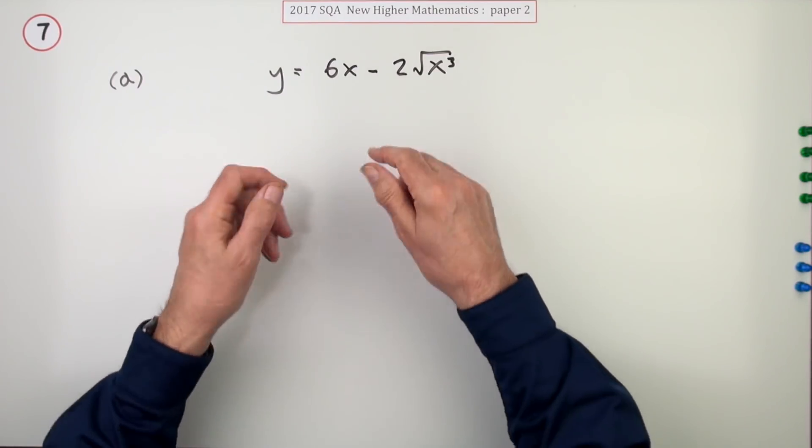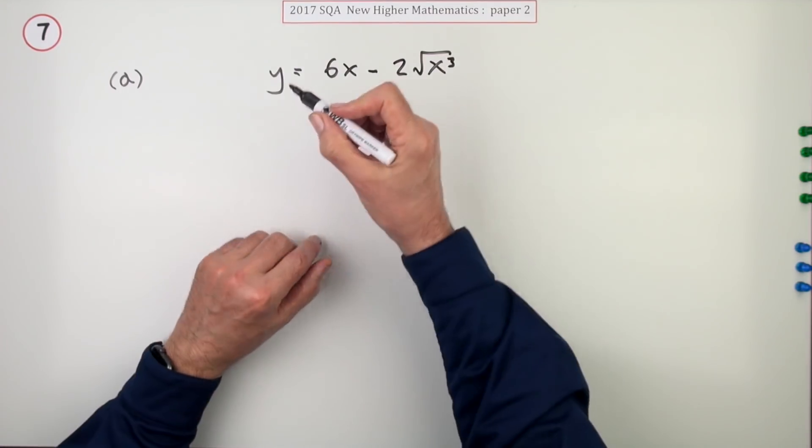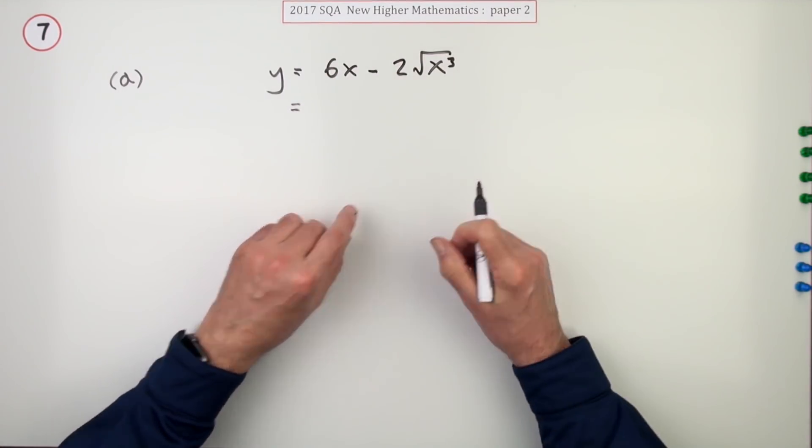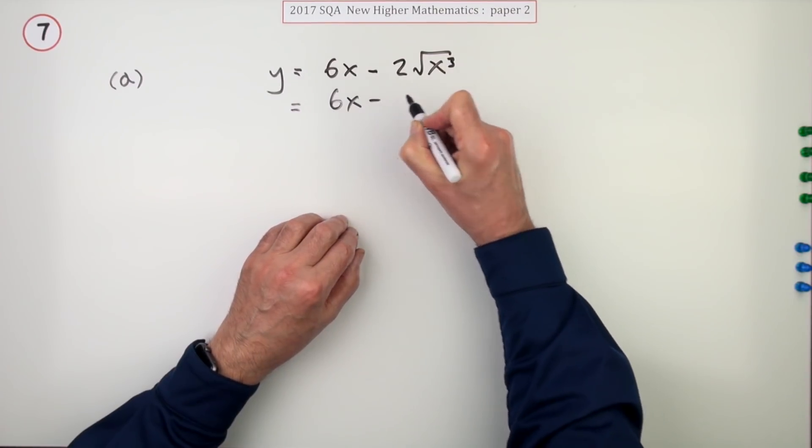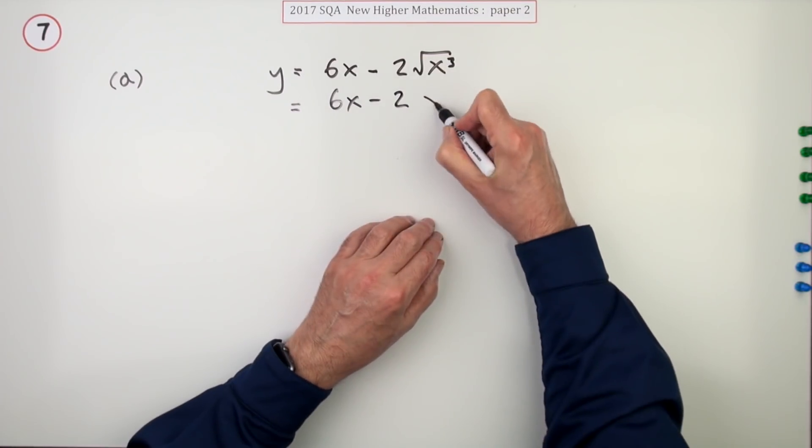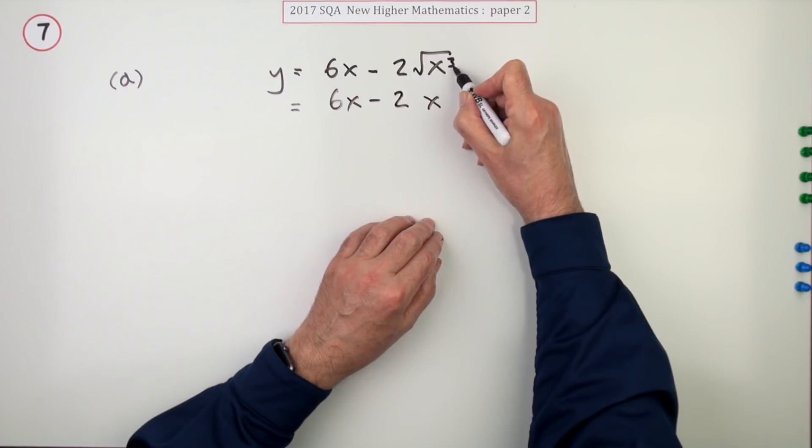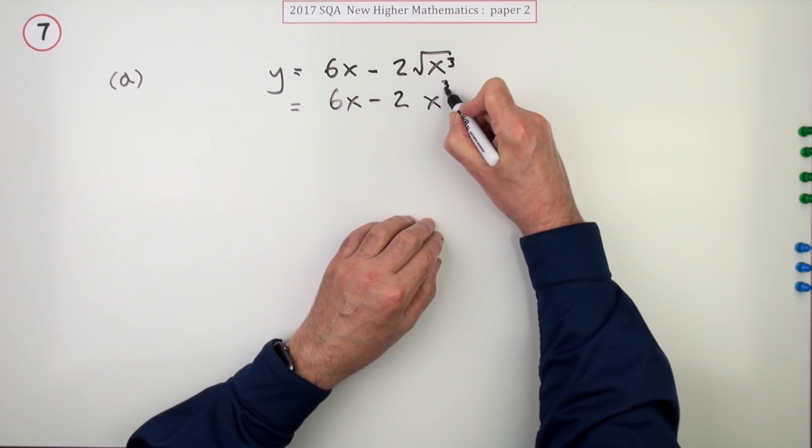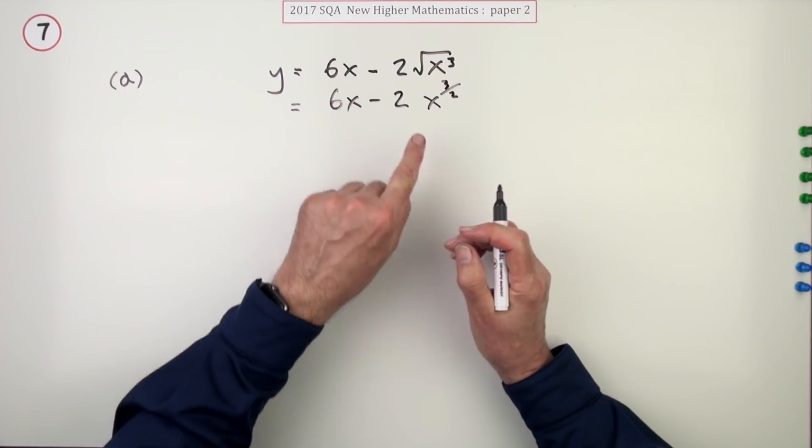Well that'll be differentiate. Once it's ready to go, this term needs sorted out. So it's 6x minus the 2 is fine, the 3 is a power and that's a square root so it's power 3 upon 2.